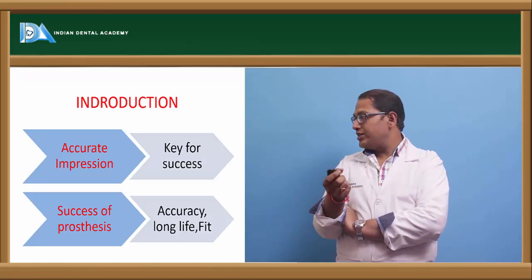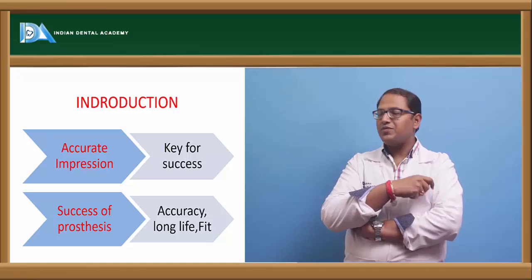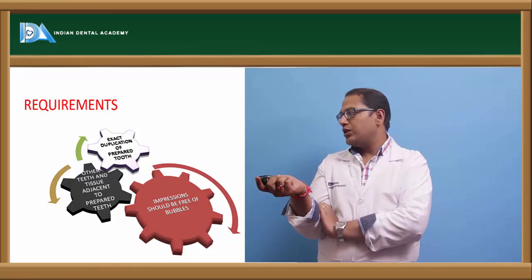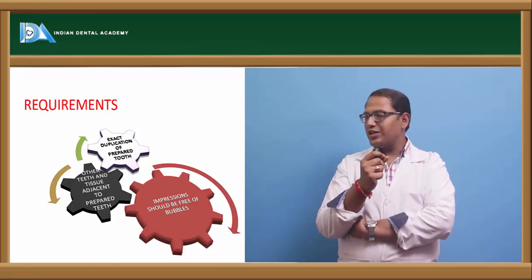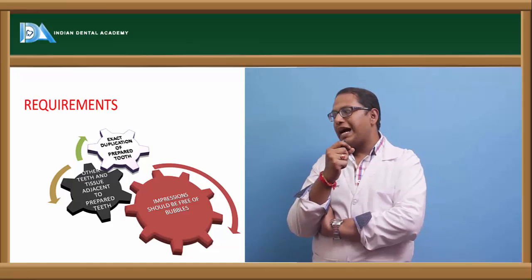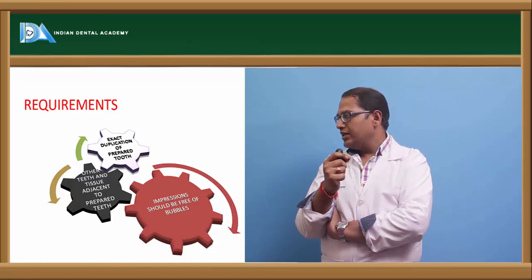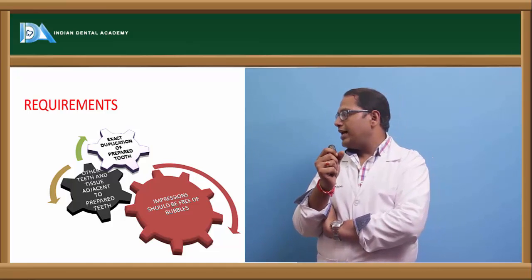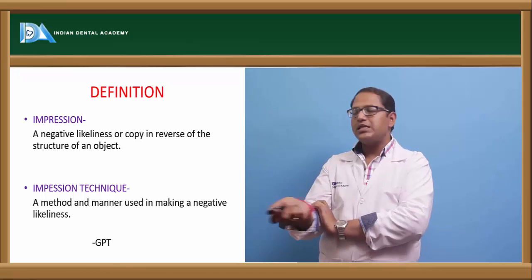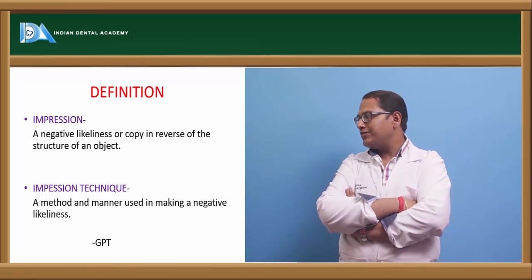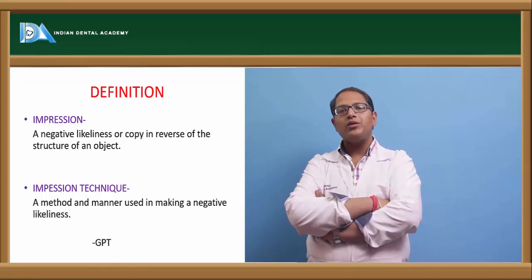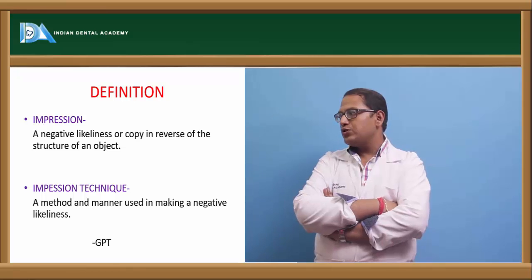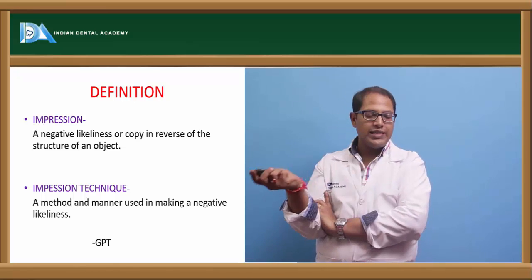An accurate impression is a key for success, whereas success of the prosthesis remains in accuracy, long life, and fit of the denture. The extra requirements of a fixed partial denture impression include exact duplication of the prepared tooth, the adjacent teeth should not be disturbed, and the impression should be free of any bubbles. The definition of impression is a negative likeness or copy in reverse of the structure of an object, and the method used to make it is called impression technique.